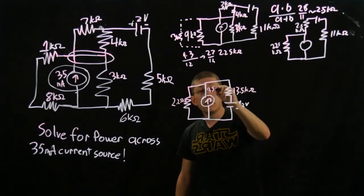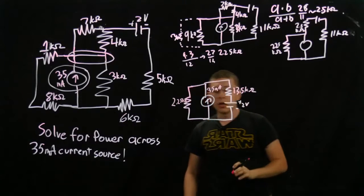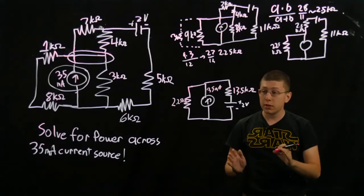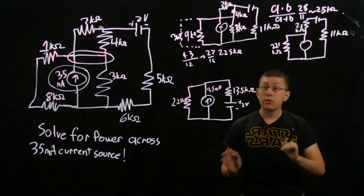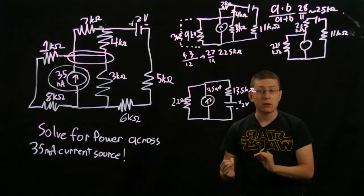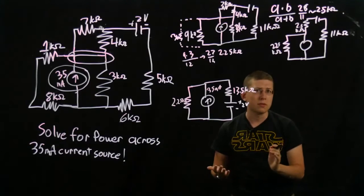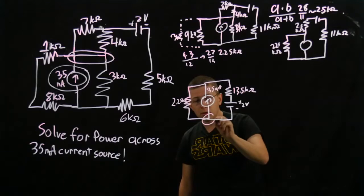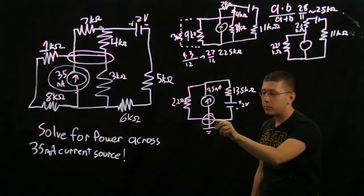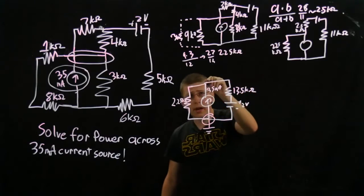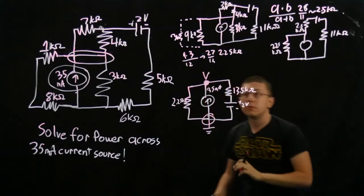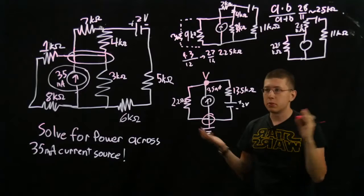The first thing we want to do is pick a node for ground. You usually want to pick the most complicated node — where most things interconnect — as your zero volts; it just makes your life easier. In this case, everything connects to this node right here, so that's going to be our ground. This means we really only have one node to solve for, and I'm going to label it V, because there's only one — so there's no need for V1.